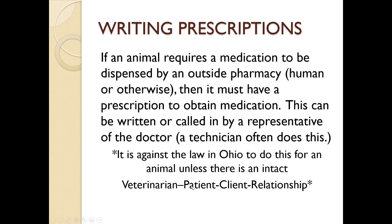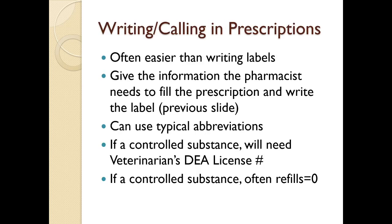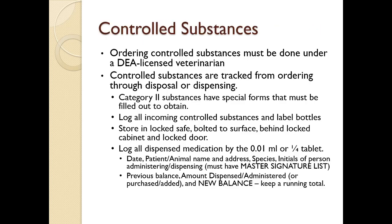If an animal requires medication dispensed by an outside pharmacy, it must have a prescription based on the veterinarian-client-patient relationship. The technician is often the one calling that in. Writing it down or calling it in is easier than writing labels — we give the information to the pharmacist who writes the label. If it's a controlled substance, you'll need the veterinarian's DEA license number, which is a very controlled and confidential item. Controlled substances typically have zero refills.